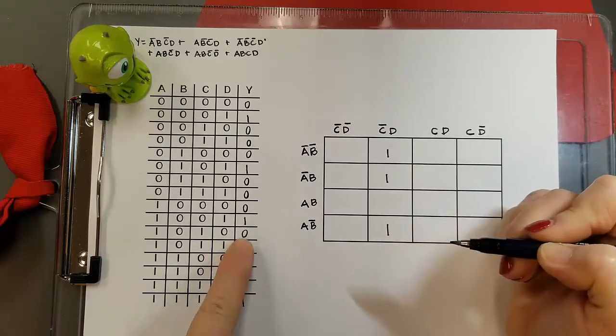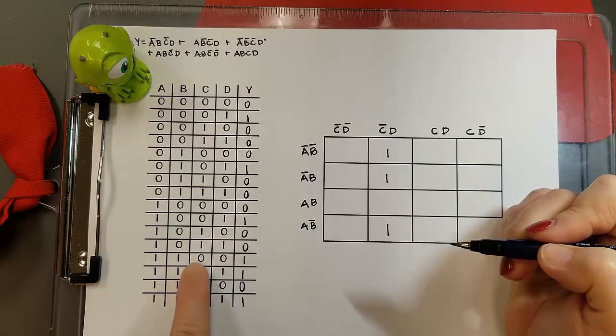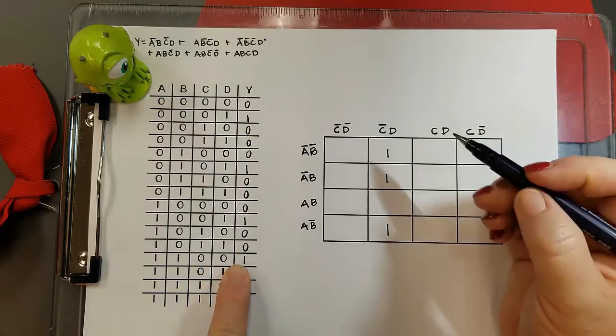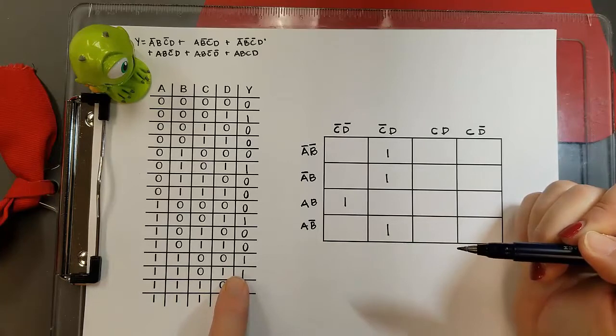I'll go down to A not B not C D and enter a one there. So I'm going to proceed all the way through doing this until I have all the ones entered in my k-map.